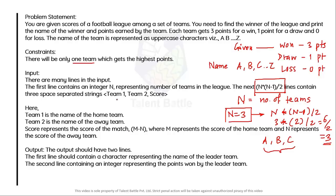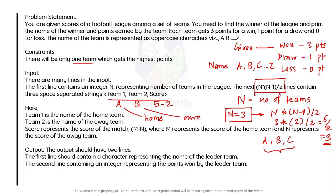Each input line has three space-separated values: Team1, Team2, and the score in the format M-N. Suppose Team1 is A, Team2 is B, and the score is 5-2. That means A scored 5 goals and B scored 2 goals. M represents the score of the home team and N represents the score of the away team.